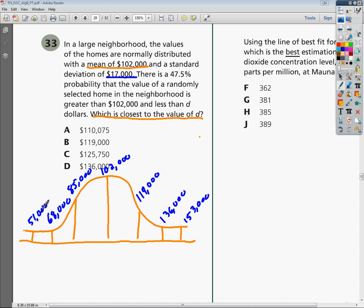Well, most of the work for this problem has actually already been done, except now it just wants to know that there's a 47.5% probability that the value of a randomly selected home in the neighborhood is greater than $102,000. So what's going to be closest to the value?